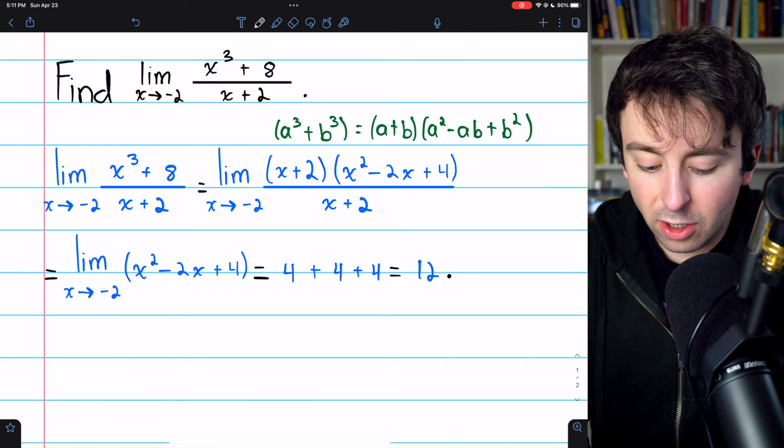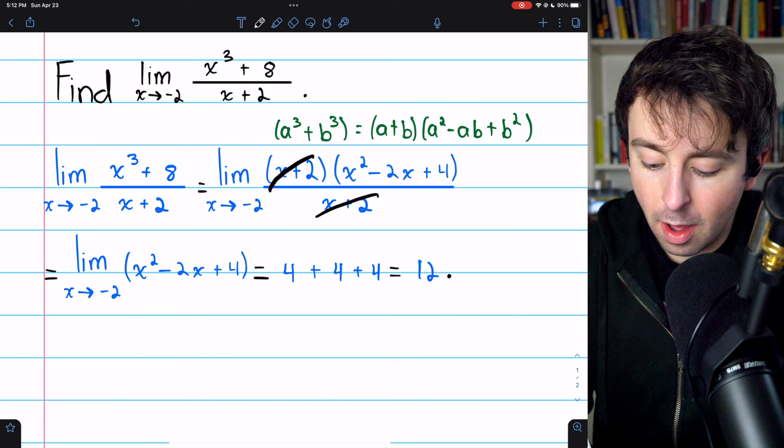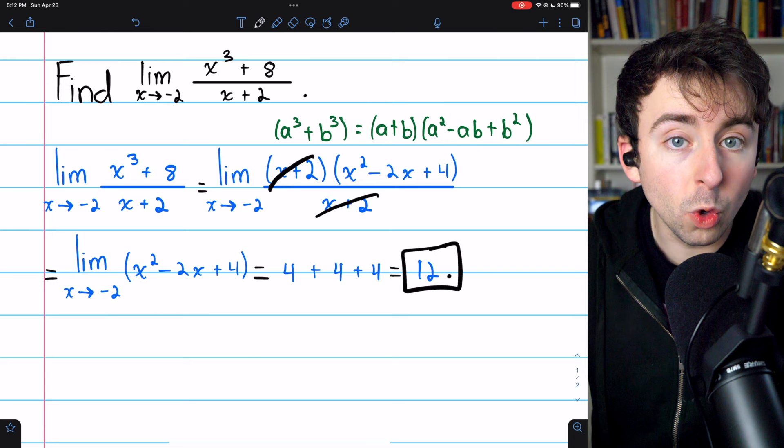Once more, all we had to do was factor the numerator, which was a sum of cubes. That gave us this numerator and denominator cancel out, and then we're able to plug in negative two to find that our limit is 12.